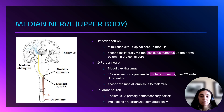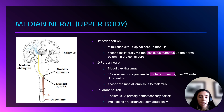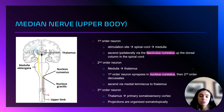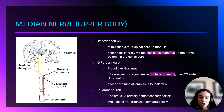The signal ascends ipsilaterally via the fasciculus cuneatus in the dorsal column and synapses in the nucleus cuneatus at the medulla. From there, the second order neuron crosses over and ascends through the medial lemniscus to reach the thalamus. Finally, the third order neuron transmits the signal from the thalamus to the primary somatosensory cortex in the parietal lobe, where the brain processes the sensory information. This pathway is crucial for detecting sensory disturbances and ensuring the nervous system functions properly during surgery.